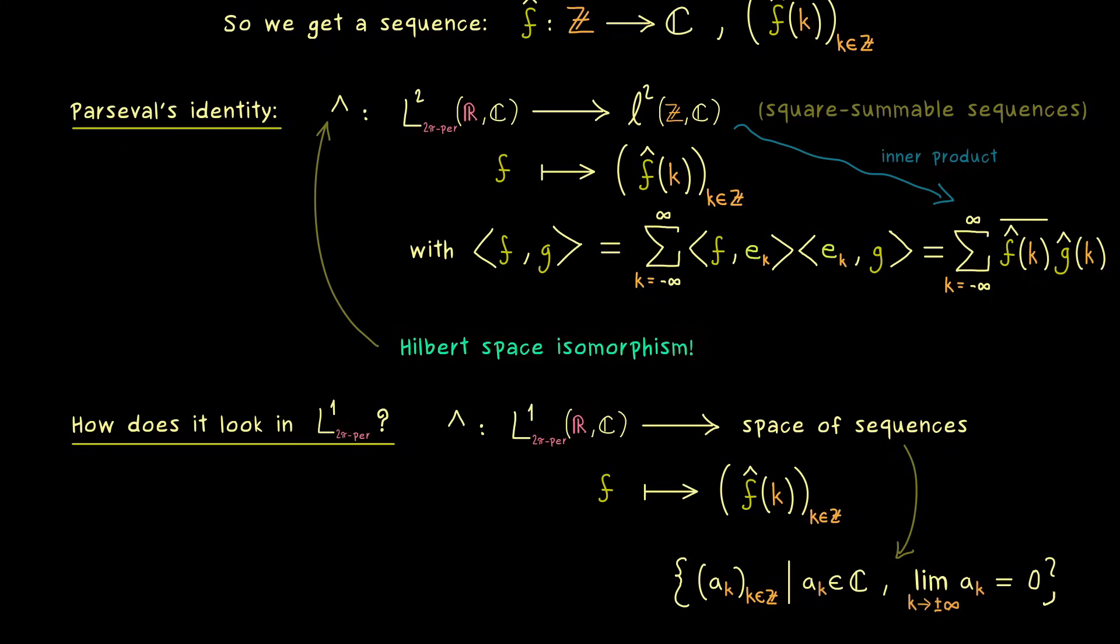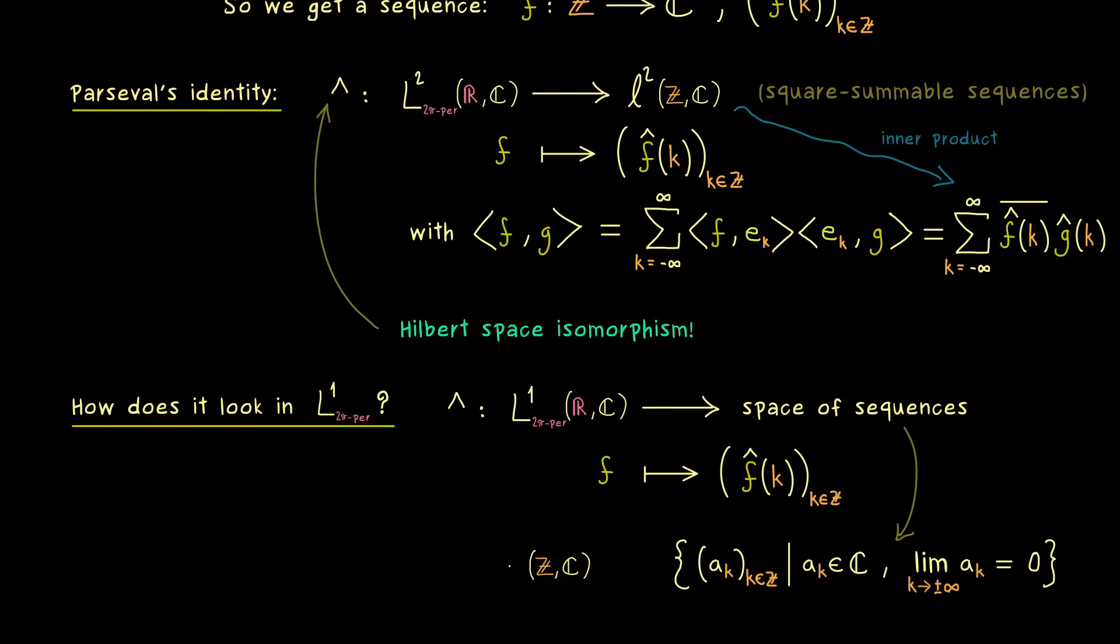So the output we get with the Fourier transformation here lies definitely inside this space of sequences. And I can already tell you the common notation we have for that space is lowercase c₀. Indeed the name already explains it, convergent with limit zero. Moreover I should say this result we can prove in the next video because it's the famous Riemann-Lebesgue lemma.